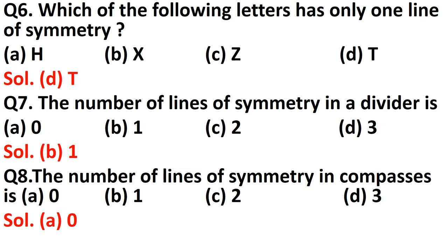Question number eight: the number of lines of symmetry in a compass. In a pair of compasses there is zero — a compass has no line of symmetry.